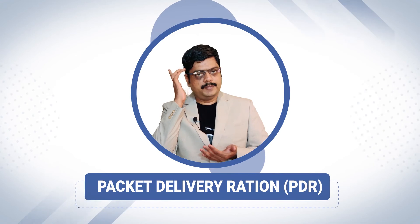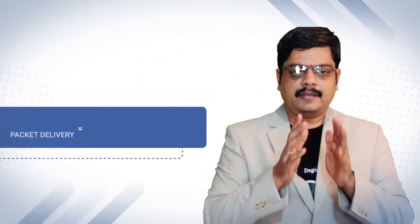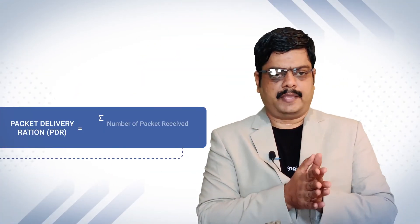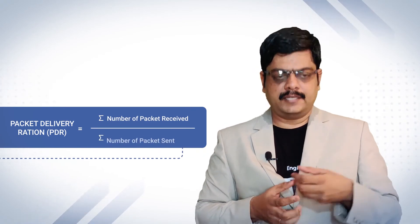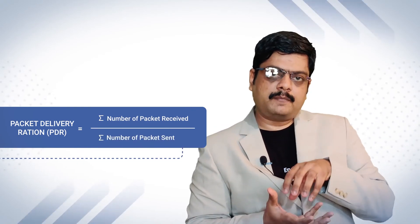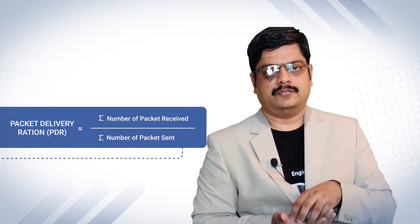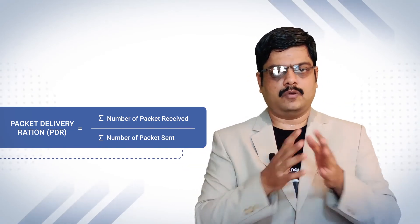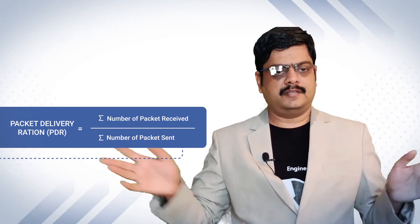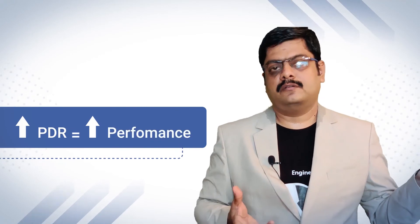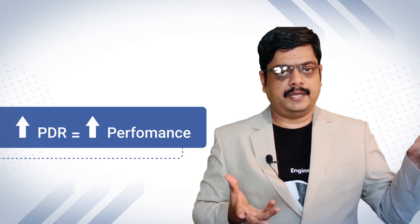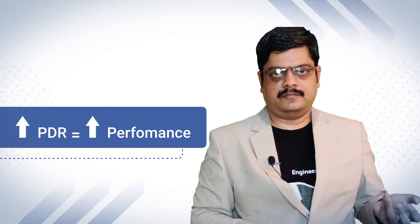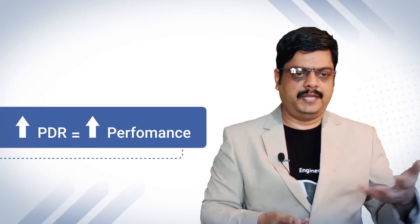Next we will talk about Packet Delivery Ratio, simply called PDR. The packet delivery ratio is the ratio of the number of packets successfully received by the destination divided by the total number of packets sent. If it is 100%, all packets sent are being received — a PDR of 100%. When the PDR decreases, the performance of the network also decreases. That's the simple logic on PDR.